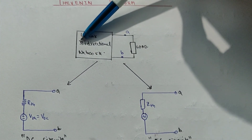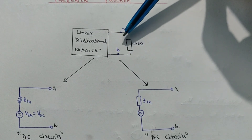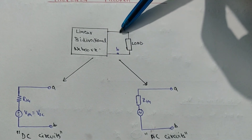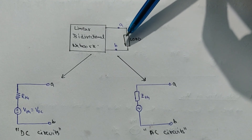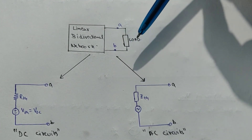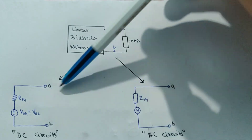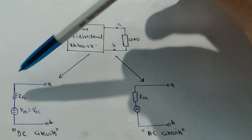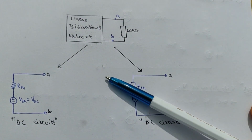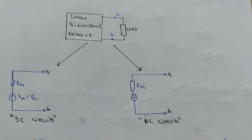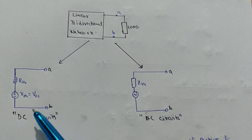So suppose we have this network which is a linear and bidirectional network and we have to calculate Thevenin theorem between A and B. A load is connected between A and B. The basic idea of Thevenin theorem is to remove the load and calculate Vth and Rth, where Vth is the Thevenin equivalent voltage or open circuit voltage and Rth is the Thevenin resistance.